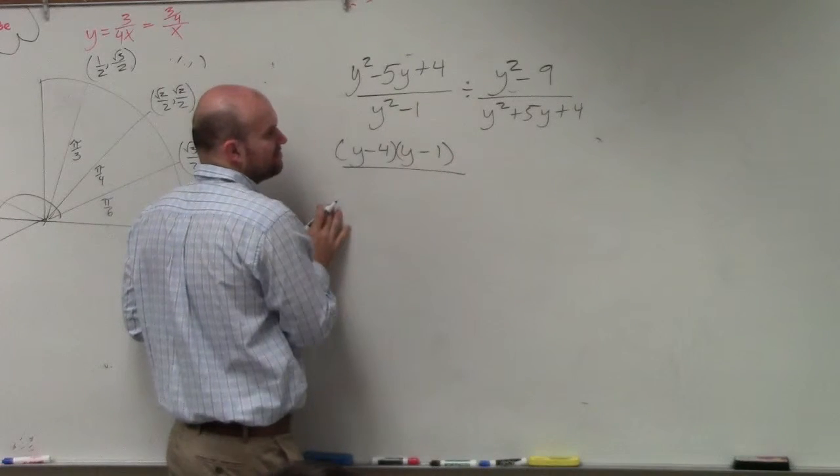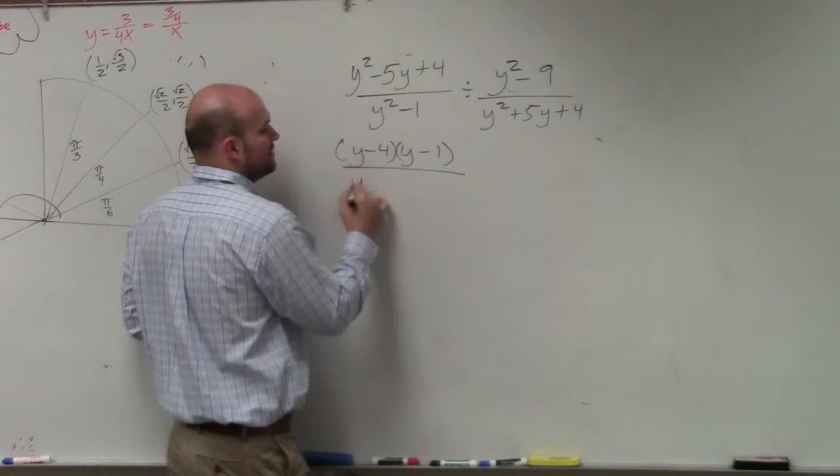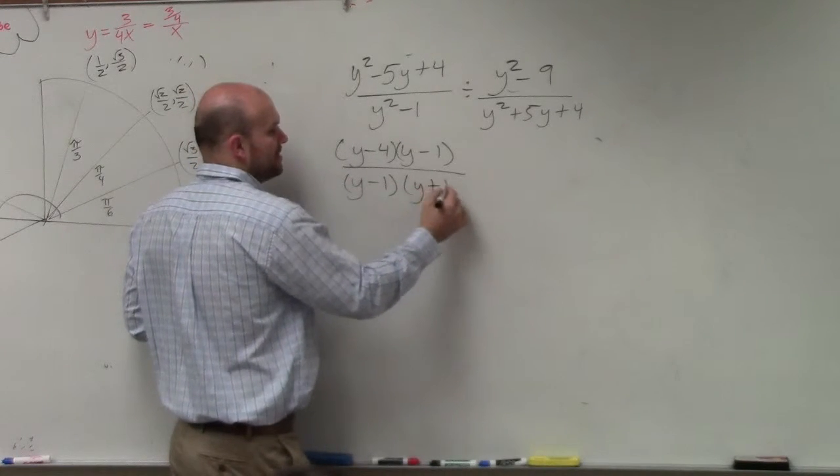Here, I have two terms. Here, I have y squared minus 1. That's a difference of two squares. I can rewrite that as (y-1) times (y+1).